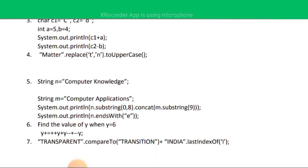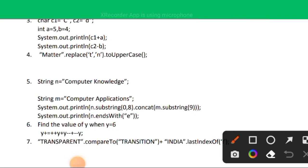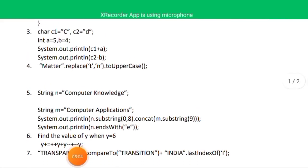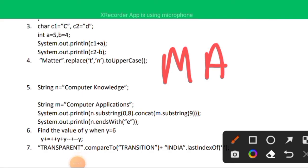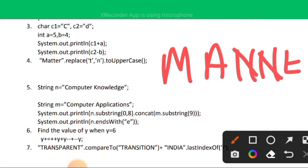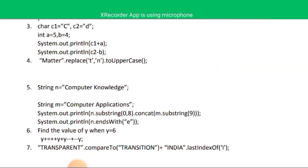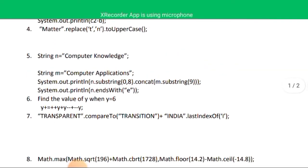Question four: the string is "matter" and we call .replace('t', 'n'). Wherever 't' appears it is replaced by 'n', so the output will be "manner" — with the capital M. The output is "Manner".